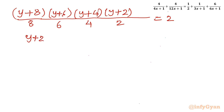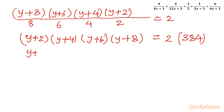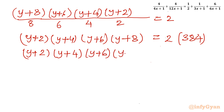So I can write (y+2)(y+4)(y+6)(y+8) equals 2×384 = 768. Now one more substitution is required. The terms are y+2, y+4, y+6, y+8, so the midpoint would be y+5.